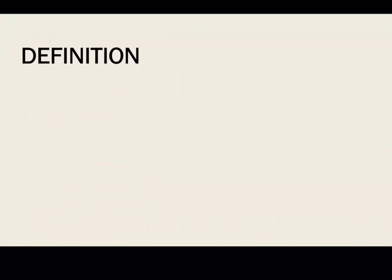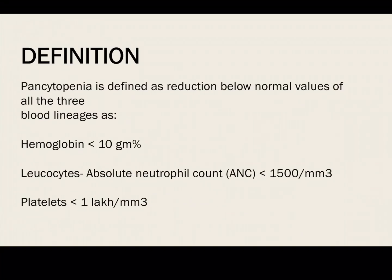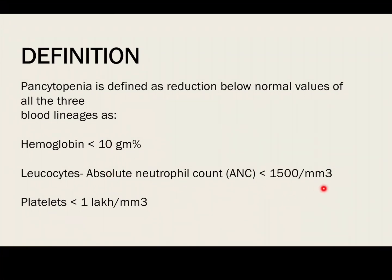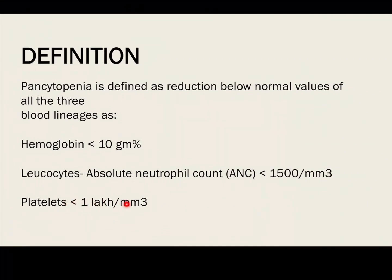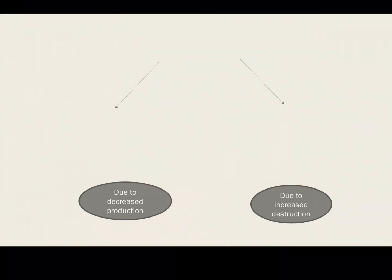Pancytopenia, as we know, is the reduction in all three cell lines, namely hemoglobin, TLC, and platelet count. When the hemoglobin is less than 10 g/dL, the leukocyte count expressed as absolute neutrophilic count is less than 1500 per mm³, and platelet count is less than 1 lakh per mm³, this is defined as pancytopenia. When any two cell lines are decreased, we call it bicytopenia and not pancytopenia.